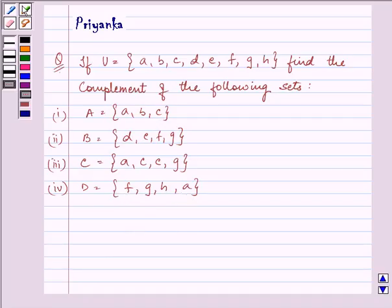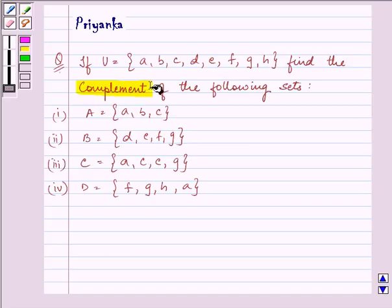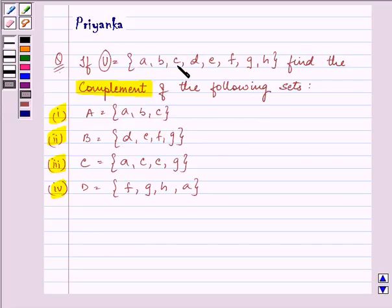Now, here we need to find the complement of these four parts by taking our universal set as A, B, C, D, E, F, G, H. Right. So, let us proceed on with our solution.